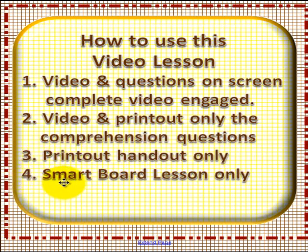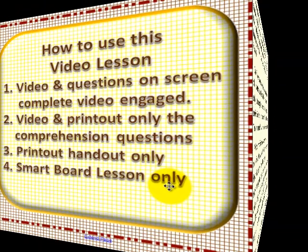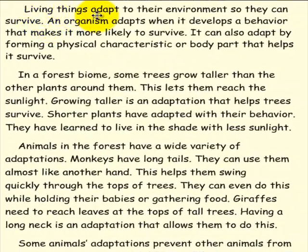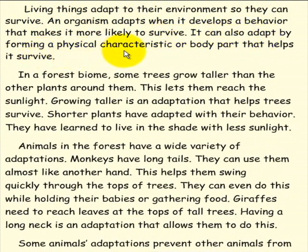Option 4: Simply use the smart board lesson. Living things adapt to their environment so they can survive. An organism adapts when it develops a behavior that makes it more likely to survive. It can also adapt by forming a physical characteristic or body part that helps it survive.